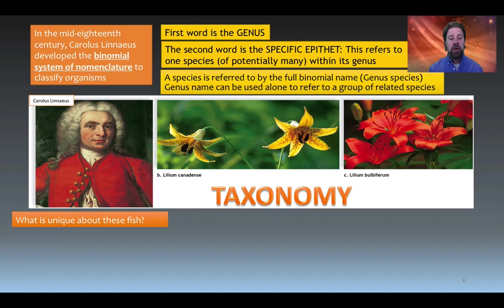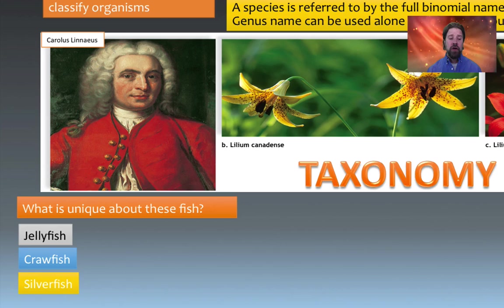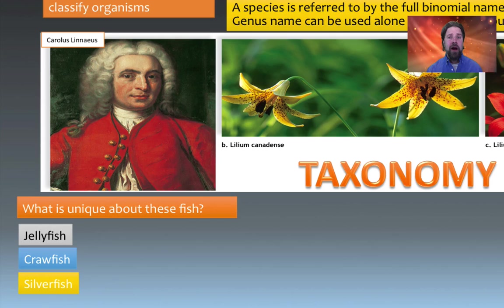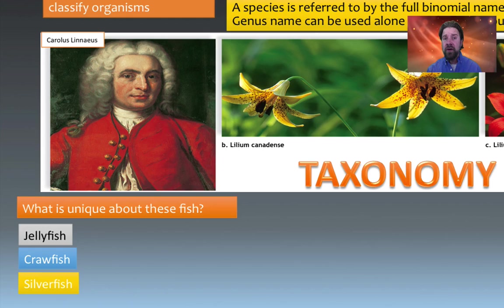Consider the need for proper classification: what is unique about jellyfish, crawfish, and silverfish? The answer is that none of them are actually fish. A jellyfish is a cnidarian, crawfish are arthropods, and silverfish are insects. The fact that they all have 'fish' in their common name doesn't help someone trying to classify organisms accurately.